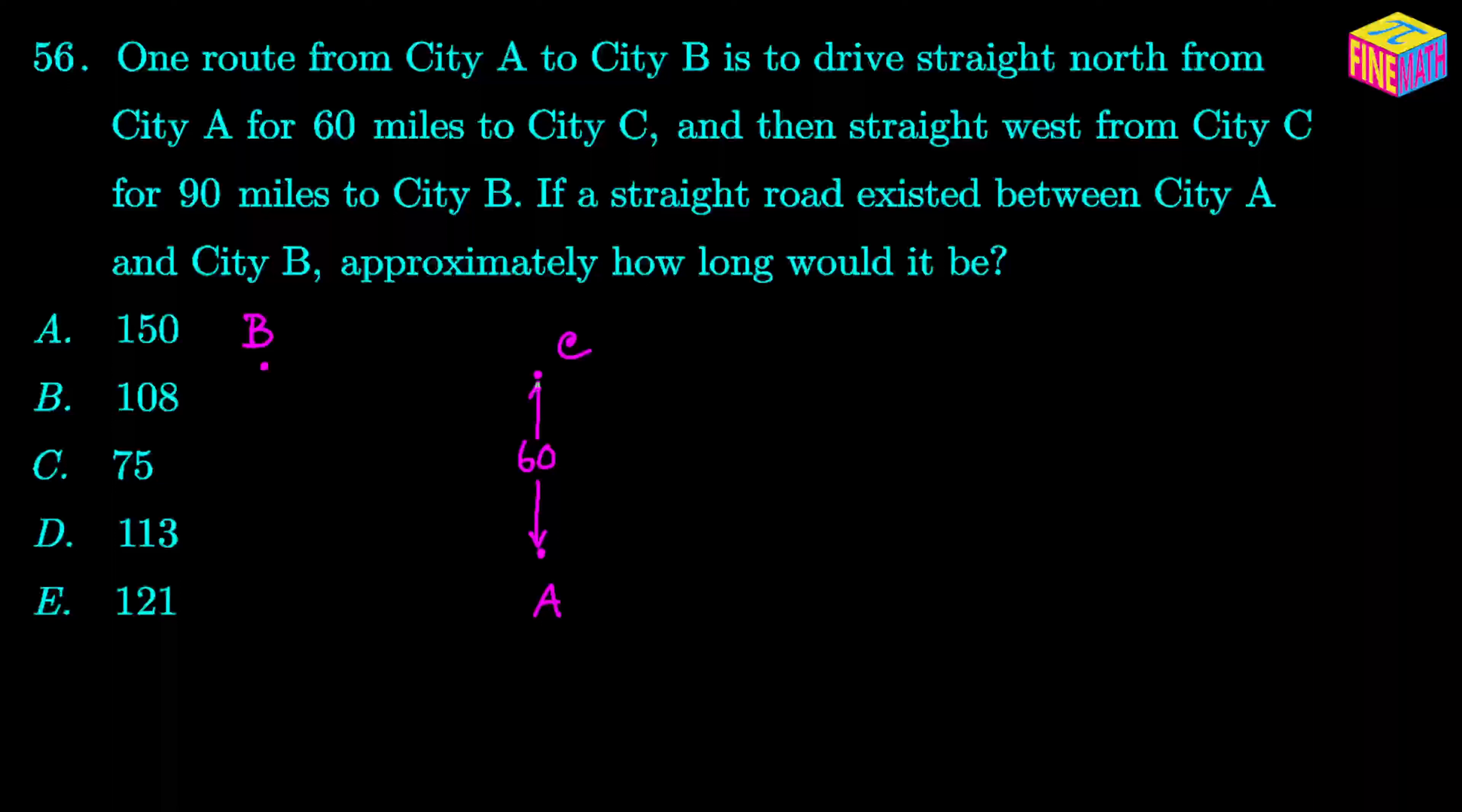And what is the distance between city C and city B? That is actually 90 miles. And we have to find out the distance between A and B if there was a straight road connecting A to B.